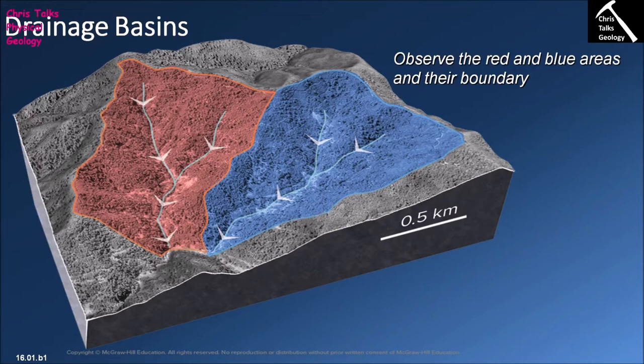If your river is at or below the water table, water will naturally flow in from the water table into the river. But if your river is above the water table, it's going to primarily rely on runoff — water moving across the surface of the Earth.